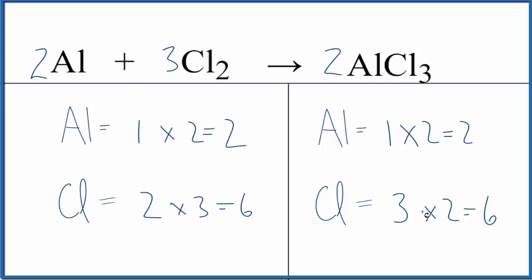And we're done. This equation is balanced. If we wanted to look at the type of reaction, we have two things. We have aluminum and then the chlorine here. They're coming together to form just this one substance.